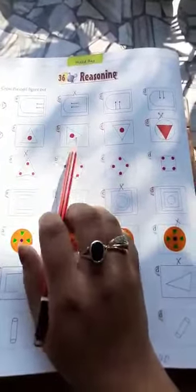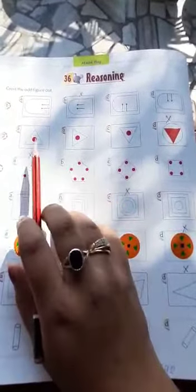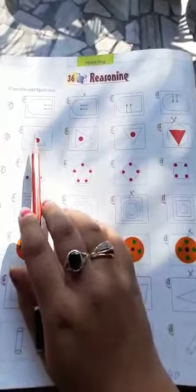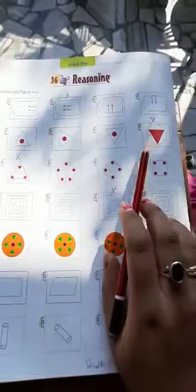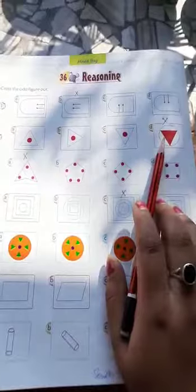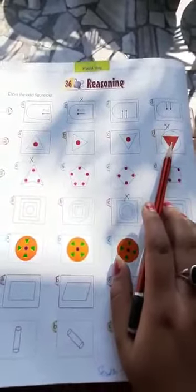In second question, in all the figures A, B and C, a circle is made inside a triangle. But in D part, a triangle is made inside a circle. So it is odd. So we will cross it.